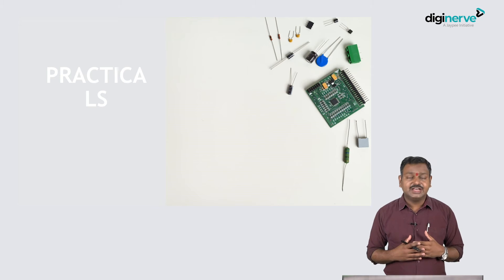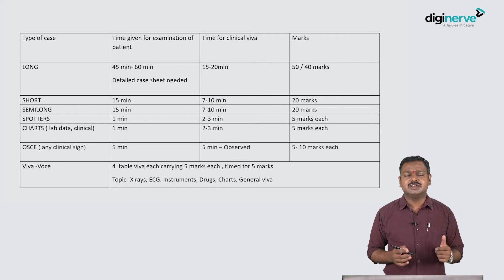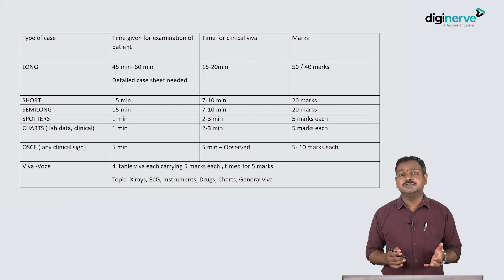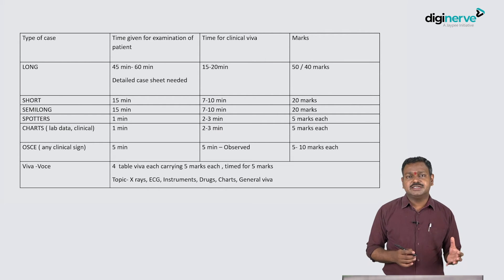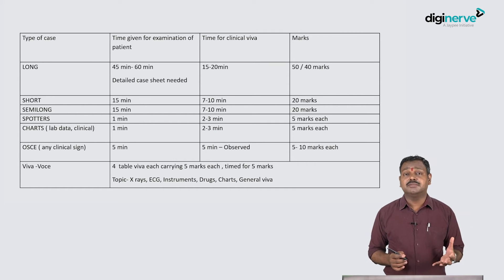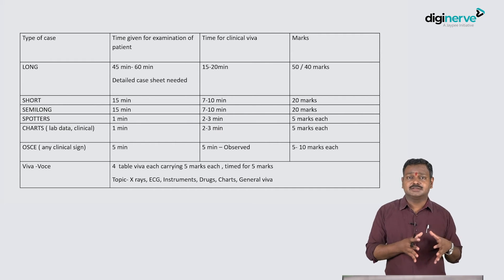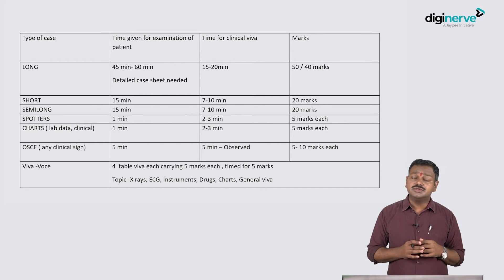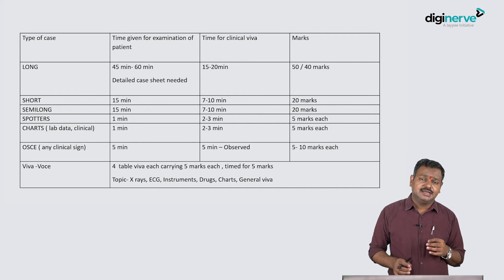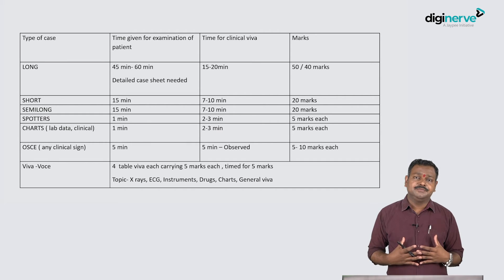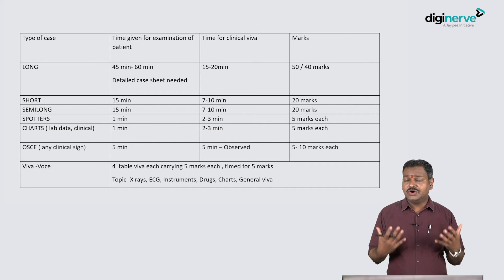Coming to practicals - the most challenging part of your MBBS career. The traditional practical pattern includes a long case, short case, semi-long case, spotters, charts, OSCEs in some universities, and a viva voce covering instruments, drugs, charts, X-rays, and ECGs. The long case carries the largest chunk of marks. It requires good case sheet writing - this does not come on exam day; you have to practice writing hundreds of case sheets to get the knack.